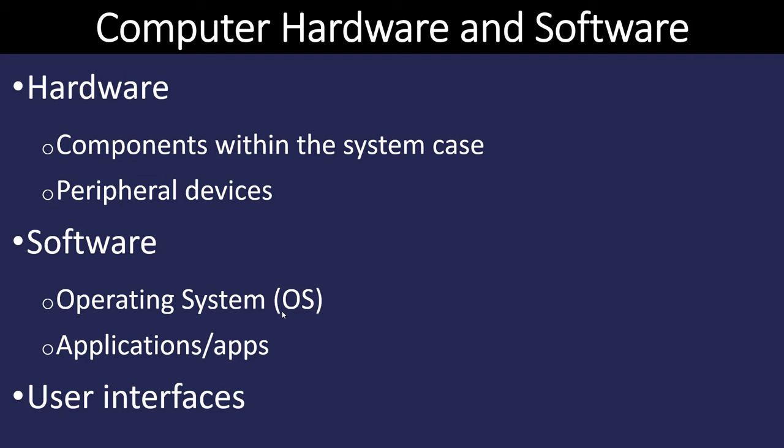An operating system is different from an application. The operating system allows the application to interact with the hardware — it's kind of the center of the Oreo cookie. If we don't have an operating system on our device, nothing is going to happen. Applications, or apps, are the software that contain instructions for what we want the computer to do.